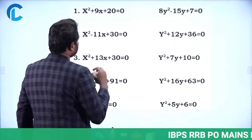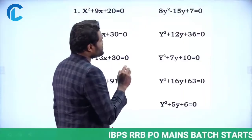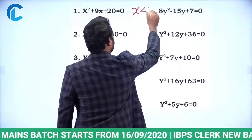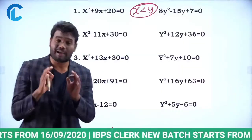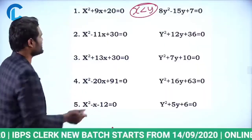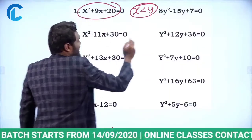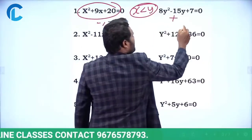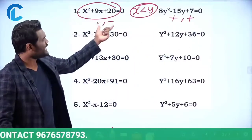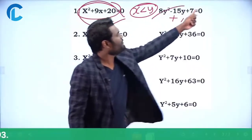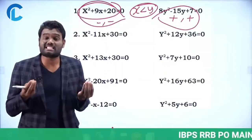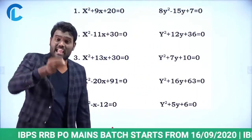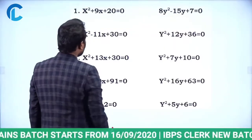Let us look at the first one: x² + 9x + 20 = 0 and 8y² - 15y + 7 = 0. Just by looking at the question itself, I can say the answer is x less than y. I will not solve this question — just by looking, I say x less than y. Why? Because here the signs are both positive, meaning the roots are negative. Here the signs are negative and positive, meaning the roots are positive. So x is negative, y is positive, which means x is less than y. You can mark the answer in just two seconds.